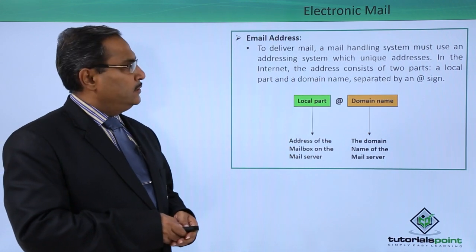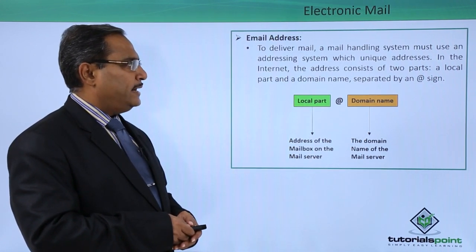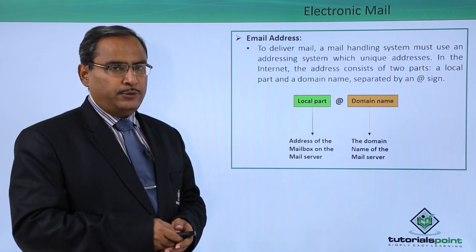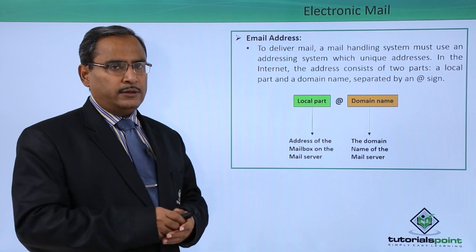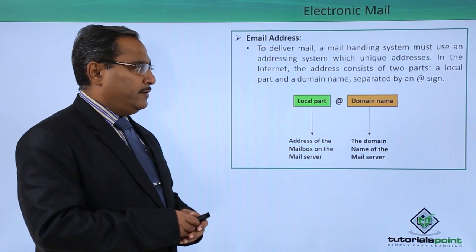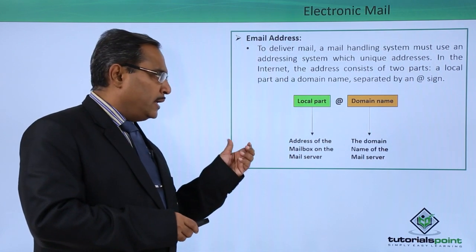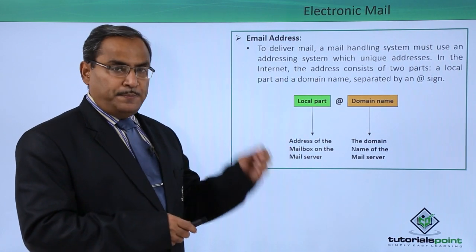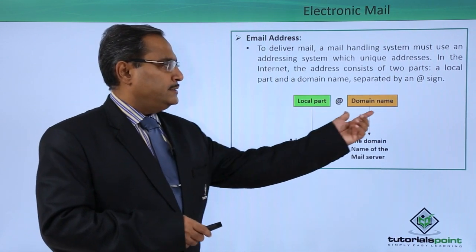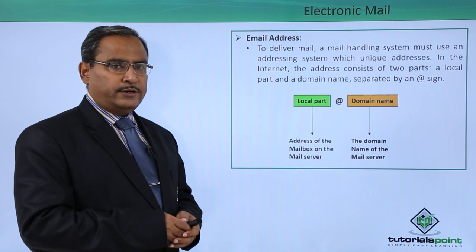To deliver mail, a mail handling system must use an addressing system which is unique — the address should be unique so there is no conflict or ambiguity. In the internet, the address consists of two parts: a local part and a domain name, separated by the at-sign (@) symbol.